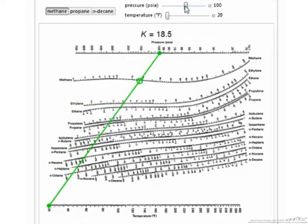Next, we fix the pressure and vary the temperature. As the temperature is increased at a fixed pressure, the k value increases. This makes sense, as methane will be more likely to be in the vapor phase at higher temperatures.